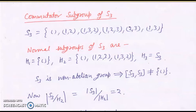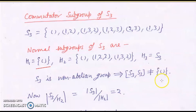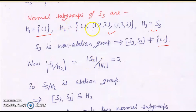Now we will determine the commutator subgroup of S3. The normal subgroups of S3 are: H1 (trivial subgroup), H2 = {e, (123), (132)}, and S3 itself. Since S3 is non-abelian, [S3,S3] cannot be H1. Considering the quotient S3/H2, its order is 6/3 = 2, and any group of order 2 is abelian. So S3/H2 is abelian, which by our property means [S3,S3] ⊆ H2. Since H2 has only two subgroups — the trivial one and itself — the commutator subgroup of S3 must be H2 = {e, (123), (132)}.